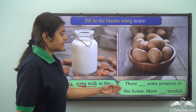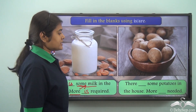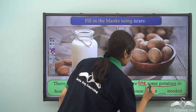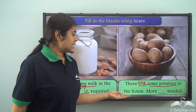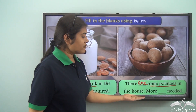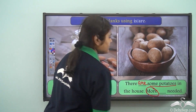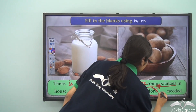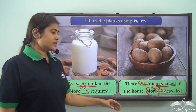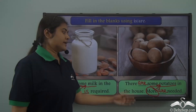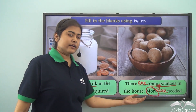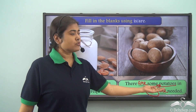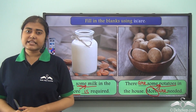For the second sentence: 'There ___ some potatoes in the house. More ___ needed.' The subject is 'some potatoes.' Potatoes is a countable plural noun, so we use the plural verb 'are': 'There are some potatoes in the house.' For 'More ___ needed,' 'more' refers back to potatoes, so more is treated as plural and we use 'are': 'More are needed.' Milk was uncountable so we used 'is'; potatoes is countable so we used 'are'; similarly 'more' follows the noun it refers to.